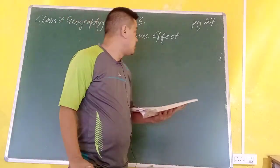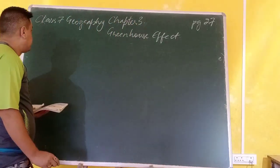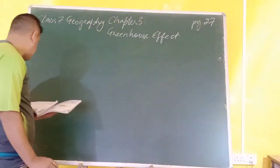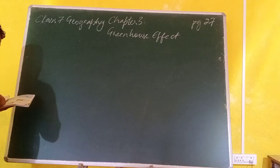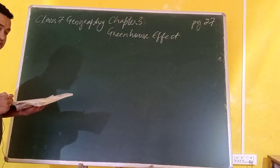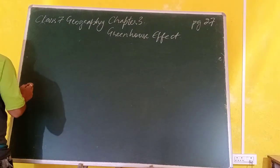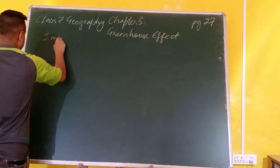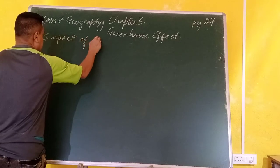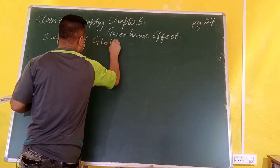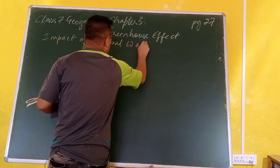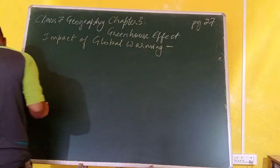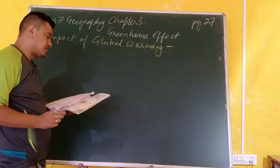Good morning students. This is a continuation of Class 7 Geography Chapter 3, Greenhouse Effect. Today we are going to discuss the topic found on page number 27: Impact of Global Warming. Whenever we talk about the impact of global warming, there are many factors involved.